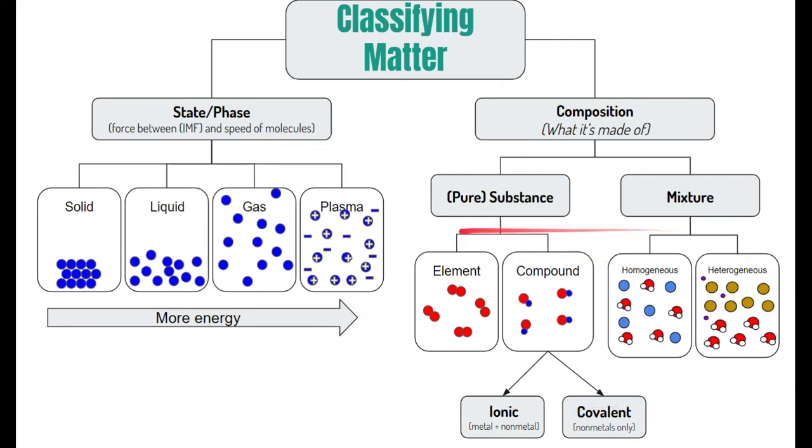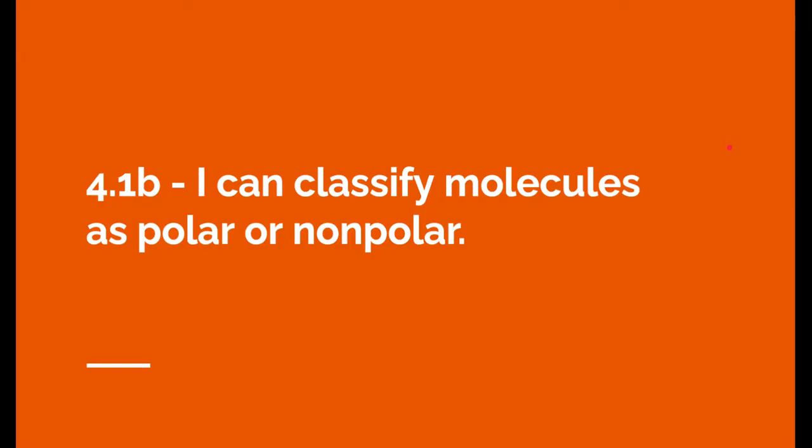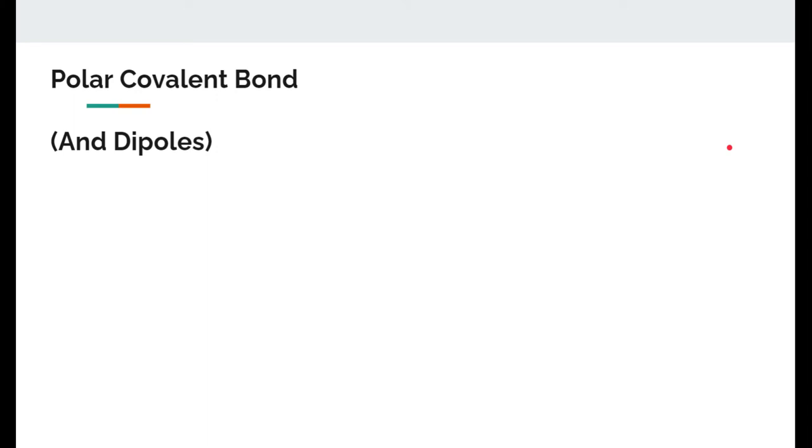We might show you the composition of matter on its atomic level, that's the micro level, or we can show it to you at the macro level. We might say, what would we classify this thing in real life as? All right, 4.1 also says I can classify molecules as polar or nonpolar. This is going to relate to the next learning target.